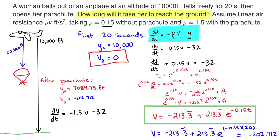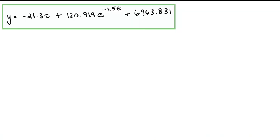This equation gives us the height of the parachuter at any time t after the parachute opens. Specifically, we want to know how long it takes for the parachuter to reach the ground. We know when the parachute reaches the ground the height equals 0. So we set the equation equal to 0 and solve for t, which tells us how many seconds it takes from the moment the parachute opens until they hit the ground.